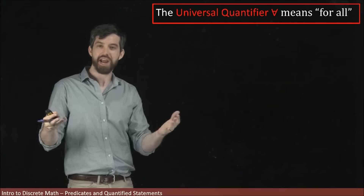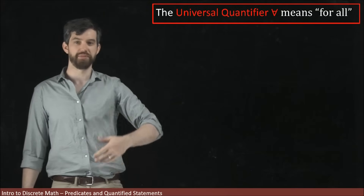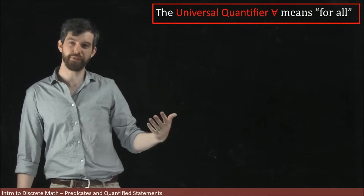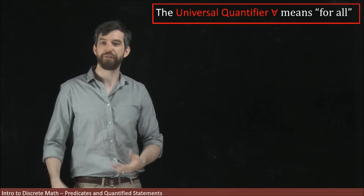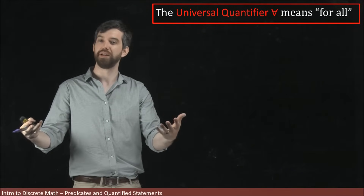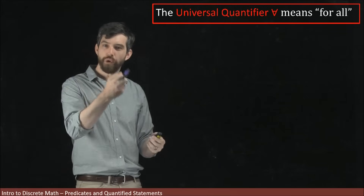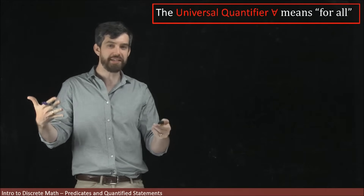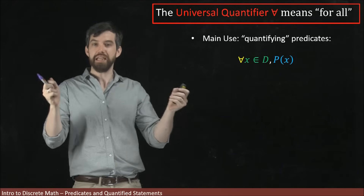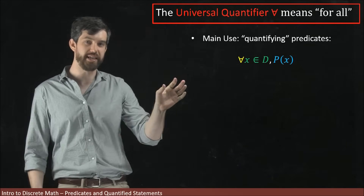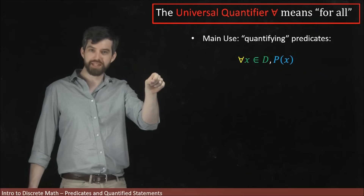The reason we care about this goes back to the idea of a predicate. A predicate is something that is sometimes true or sometimes false, but it might be that the predicate is always true — for all values of X, the predicate is true. This is why we call it a quantifier: the 'for all' quantifies some property about a predicate. The main use is in this form, written with the upside-down A, the 'for all' symbol.